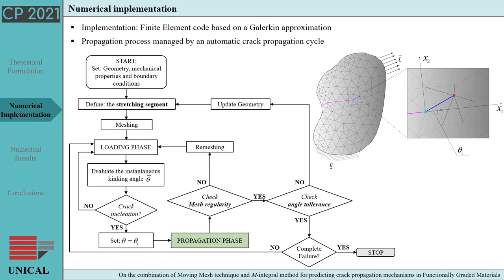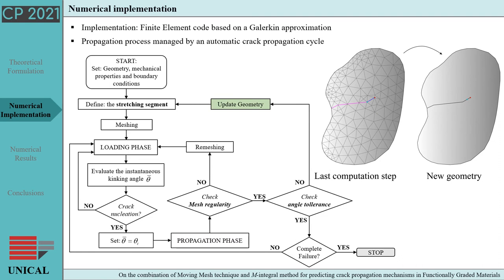Differently from standard finite element methodologies, the remeshing event takes place only in case of highly distorted elements, thus saving relevant computational resources. The stretching segment stretches either until the variation angle with respect to the initial direction is larger than a fixed value, or until the structure collapses. In the first case, once the variation angle threshold is reached, the simulation is stopped and the geometry of the domain is updated according to the last step of the simulation. Then the analysis restarts.